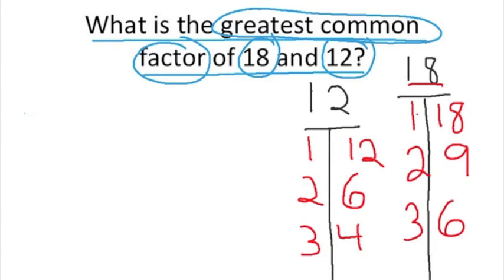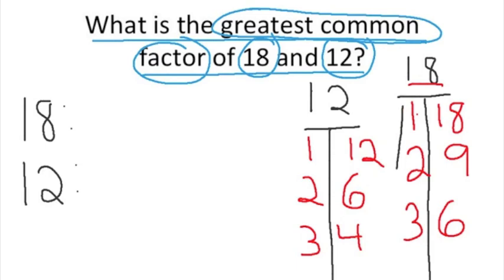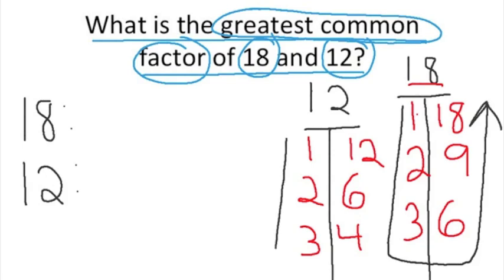Now that we have found all of the factors of both numbers, all we have to do is list the factors in order from least to greatest. We're going to list the factors of 18 and 12 in order from least to greatest — starting with 1, going down to 3, then back up to 18 — and we'll do the same with 12.